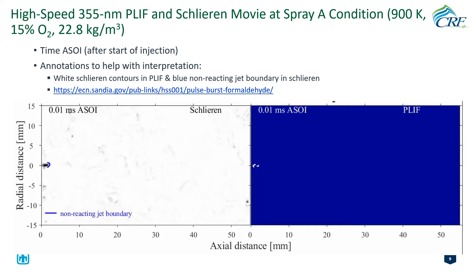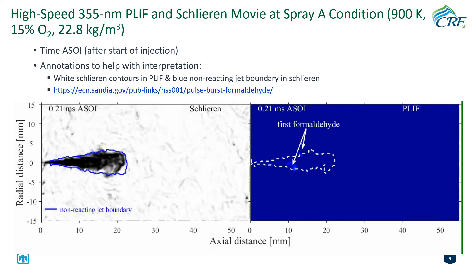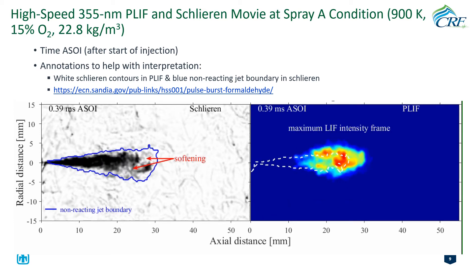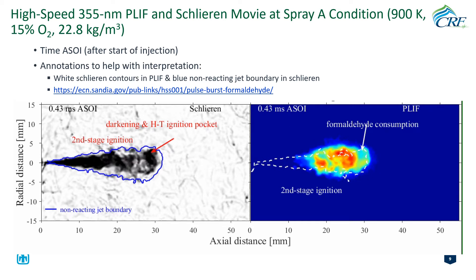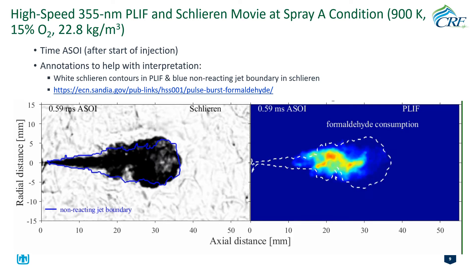Let's look at the high-speed FLIP movie on the right panel and Schlieren images on the left panel for an n-dodecane flame at spray-A conditions of 900 K and 15% oxygen. Spray is injected from the origin at time zero. Formaldehyde first appears in the mixing layers at the jet periphery, then propagates to the head of the jet very quickly, reaching maximum intensity in the core regions, followed by clear formaldehyde consumption at the high-temperature second-stage ignition.